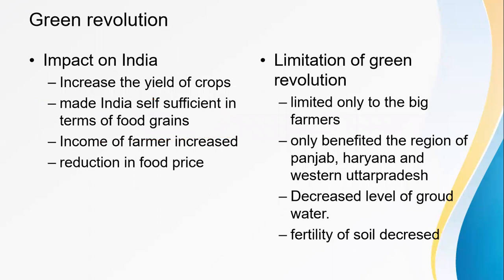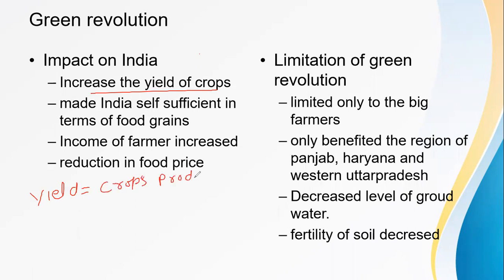What was the impact of the Green Revolution on India? The first and foremost important impact was the increase in the yield of crops. Yield means crops produced per unit of land.